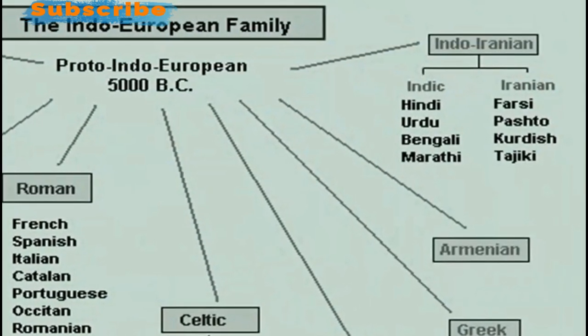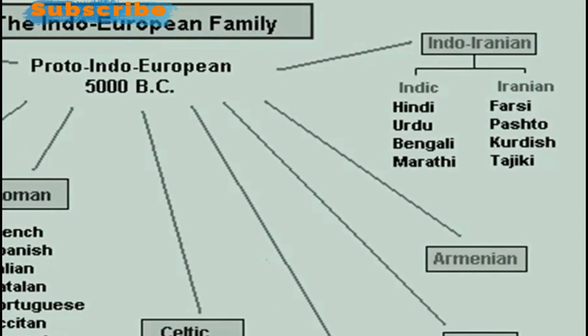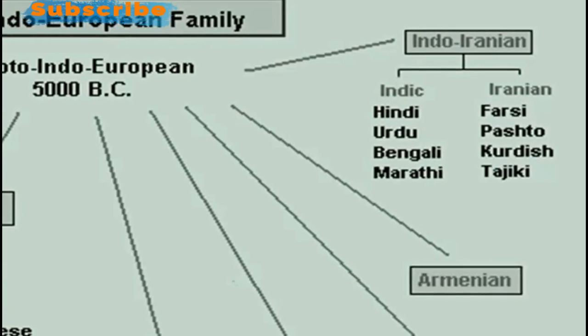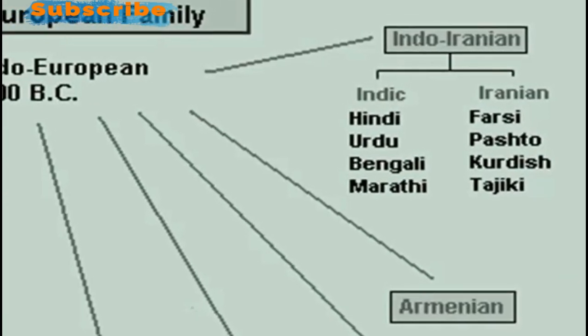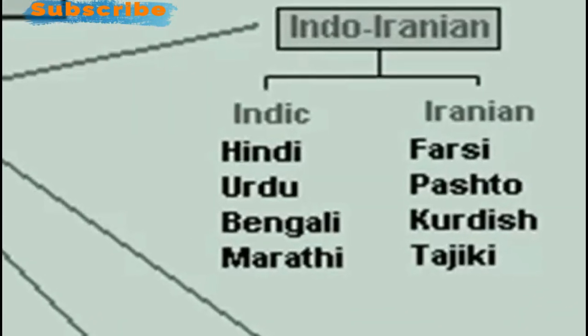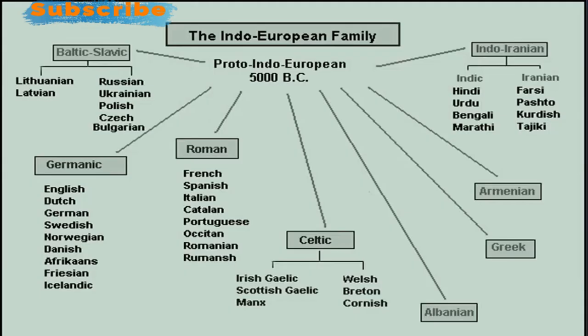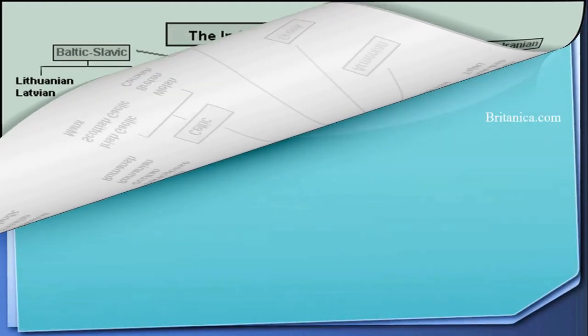The two branches are Indic and Iranian. Within Indic, you see Hindi, Urdu, Bengali, and Marathi. And if you're talking about Iranian languages: Farsi, Pashto, Kurdish, and Tajik. When we talk about Romance languages and Celtic languages, you see how languages change and have relations. The very basic origin of all these languages is Proto-Indo-European.